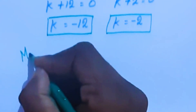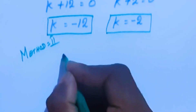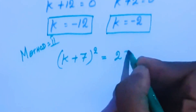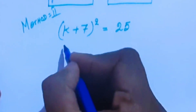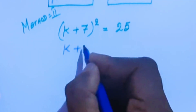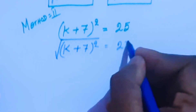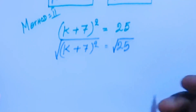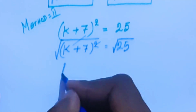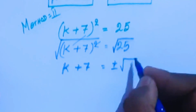Now we are going to solve using the second method. (k plus 7) squared equal to 25. We are going to take the square root on both sides, so the square and square root cancel each other.